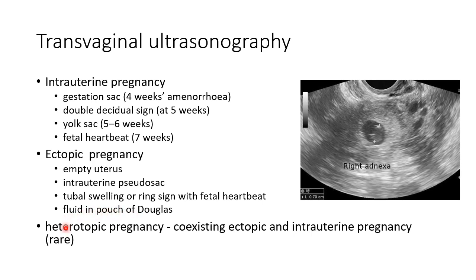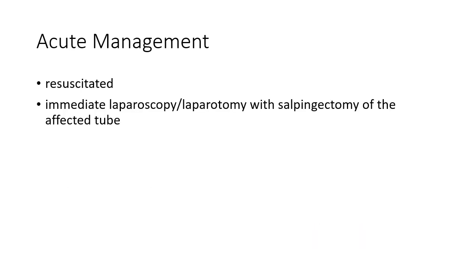There is something called heterotopic pregnancy — it is coexisting ectopic and intrauterine pregnancy at the same time, and it is very rare. Now let us see about the management of an acute case of ectopic pregnancy. The patient should be resuscitated and subjected to immediate laparoscopy or laparotomy with salpingectomy of the affected tube. Salpingectomy means removal of the fallopian tube.